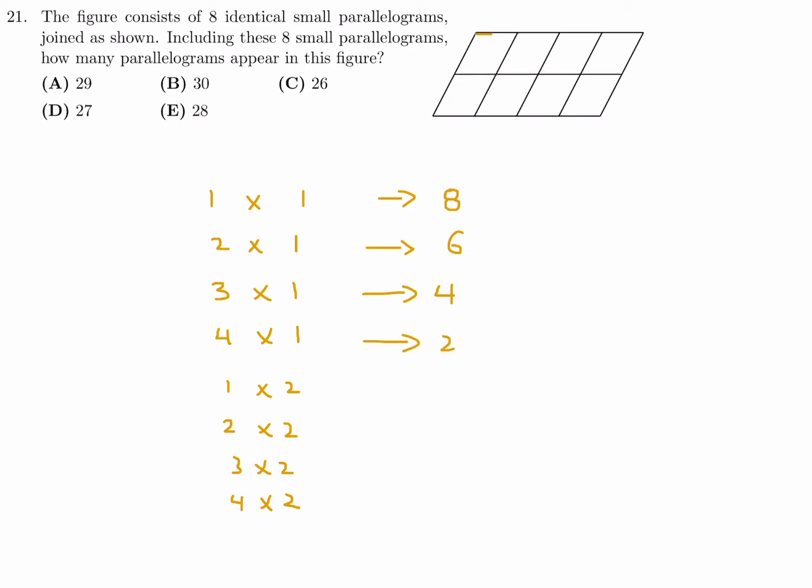Okay, 1 by 2. So 1 this way, but 2 that way. And there's going to be 4 of those. Yeah, 4 of those. 2 by 2. 2 by 2 is going to be like this, right? And then there's some overlap. So there's 3 of those. And then 3 by 2 is like this. And, of course, there's another one here. So that's 2. And then 4 by 2 is the entire thing. So that's just 1, obviously.